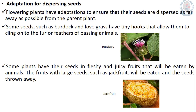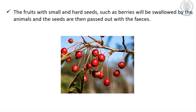Adaptations for dispersing seeds: some plants like burdock and long grass have tiny hook-like or spine-like structures that can attach to the fur and feathers of animals and be dispersed. Some plants such as jackfruit have fleshy and juicy fruits — animals eat those fruits and the seeds are dispersed through feces or by throwing the seeds out. Berries are swallowed by animals and the seeds are passed out with feces.